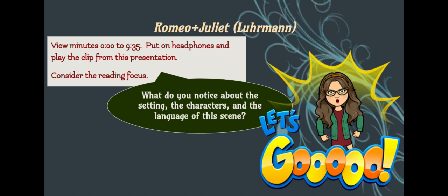How is this setting different from the text of the play? How are the characters dressed? What kind of weapons do they use? How are the different families distinguished? What type of language do they use? What music does the director choose to use in this scene?